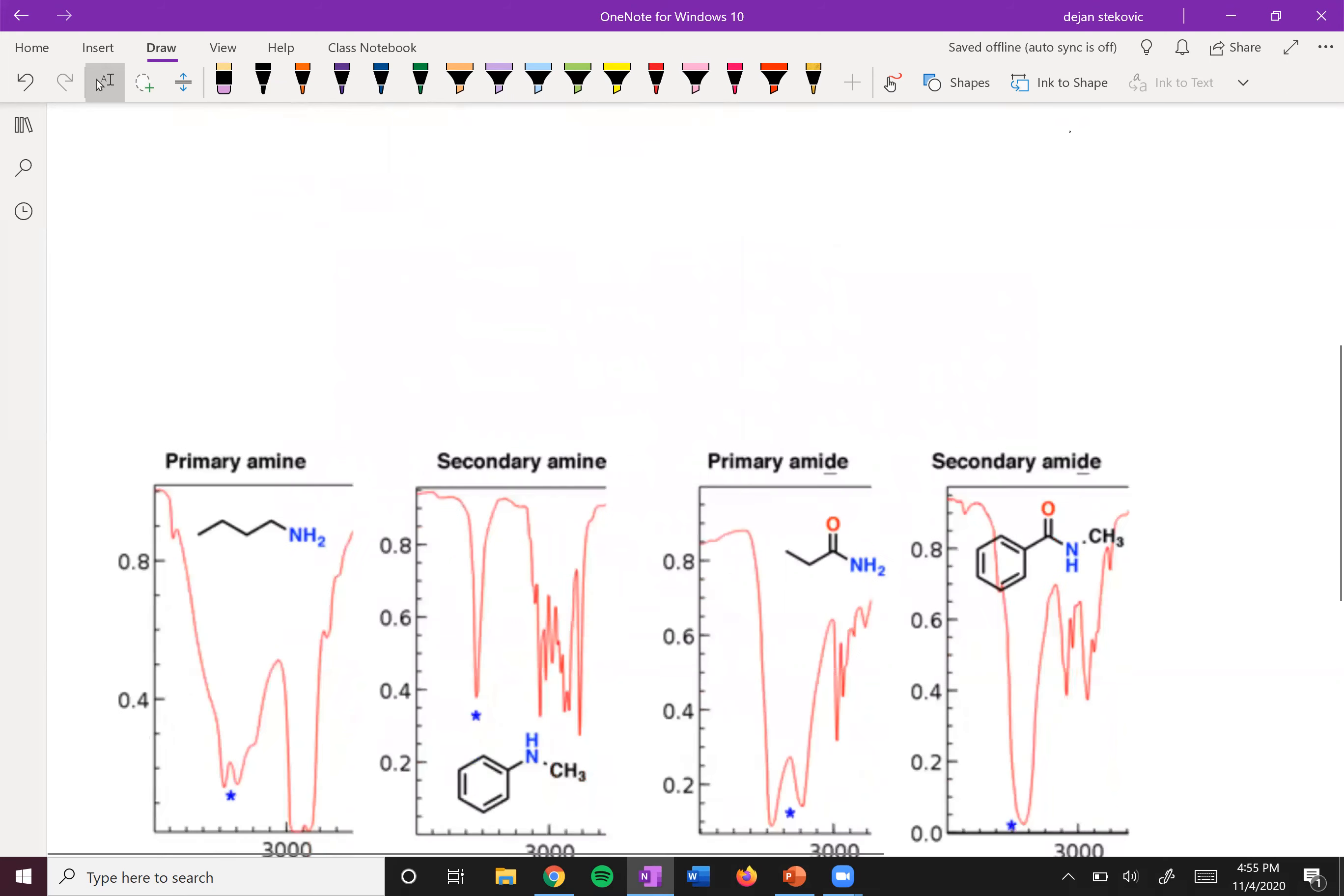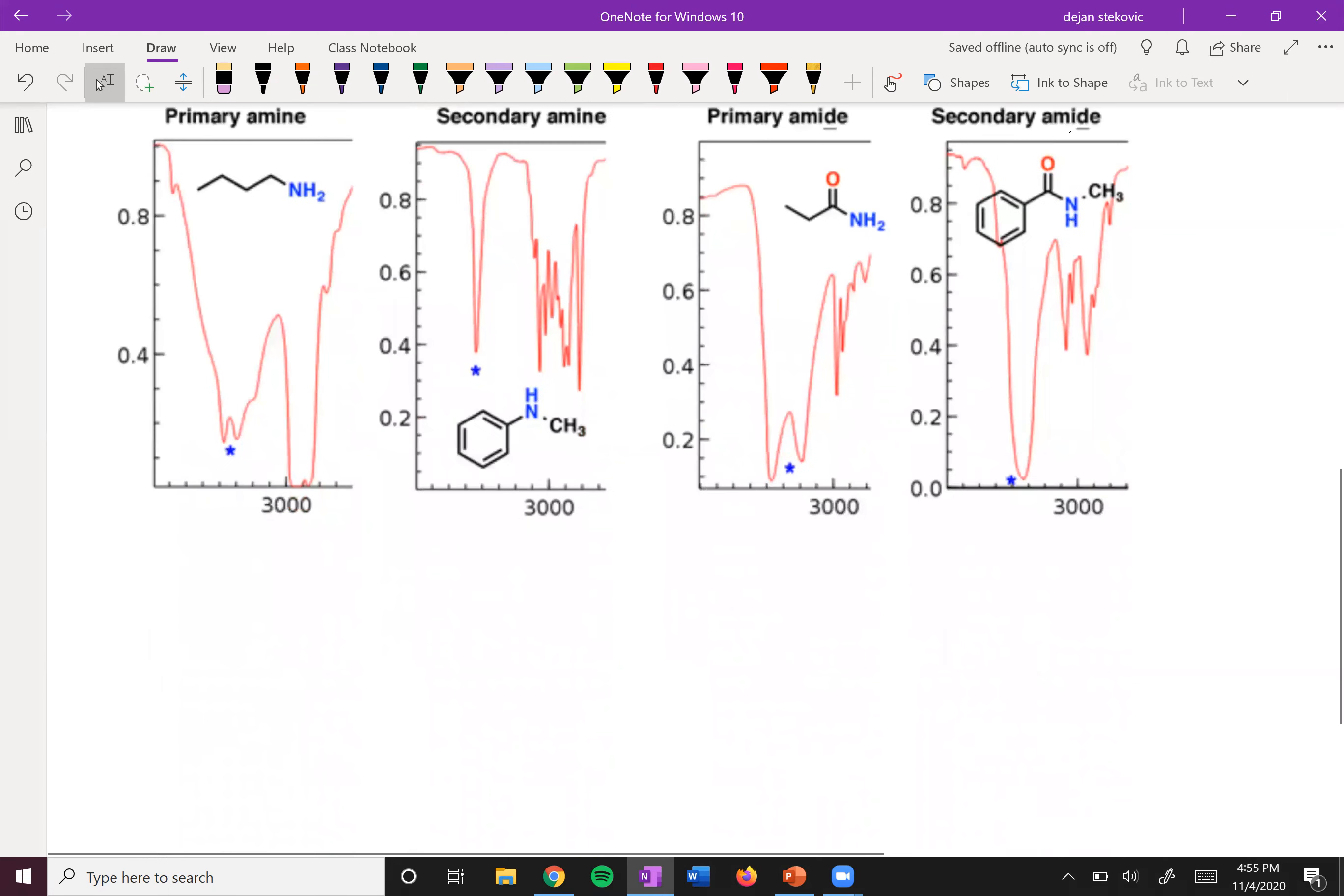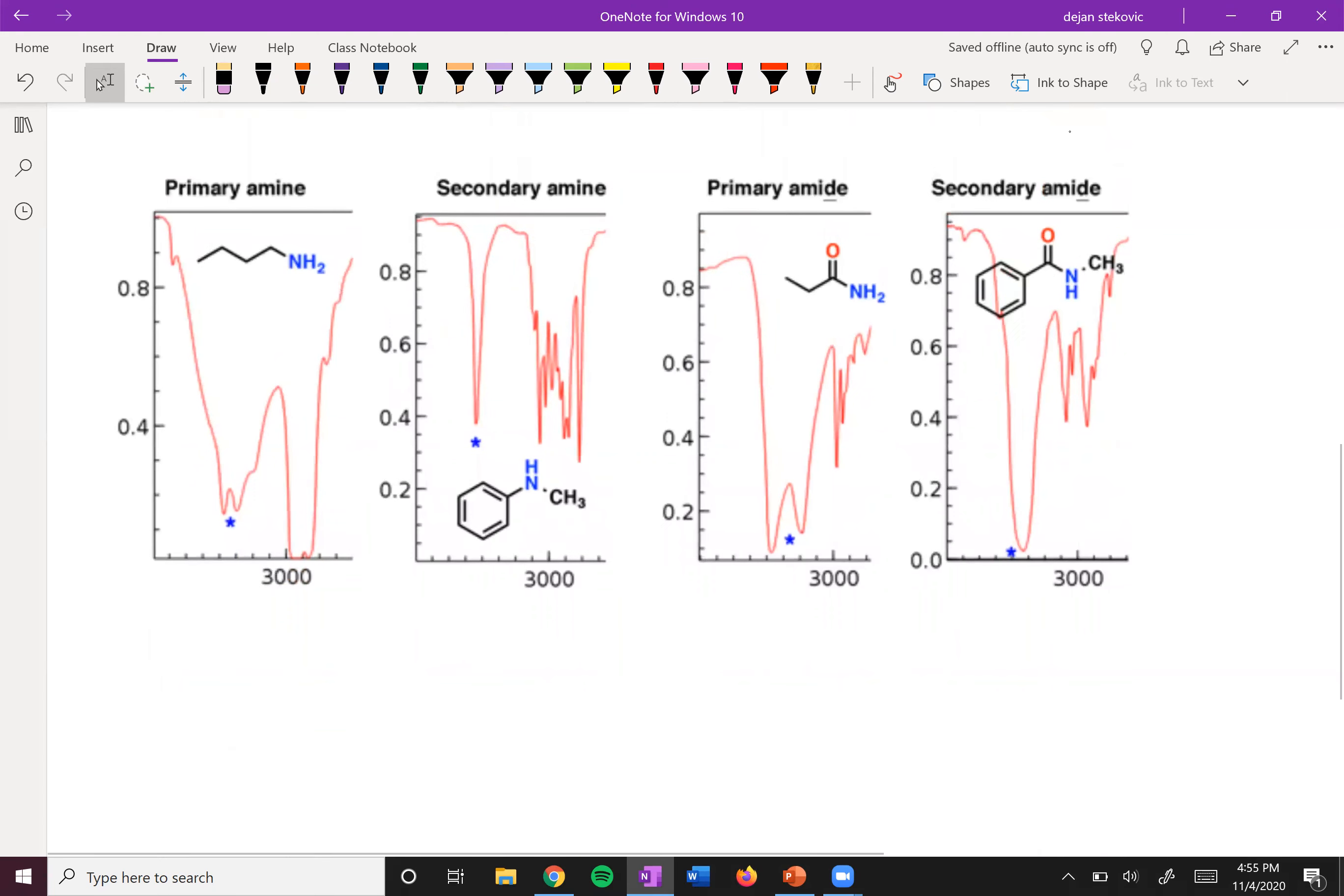There is one really useful property of these infrared spectra of amines, and that's based on whether they have two H's or one H. Do you have a situation where you have a primary amine where the nitrogen has two H's on it? Or do you have something that's a secondary amine where it only has one H on it?